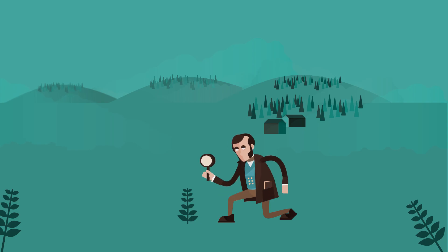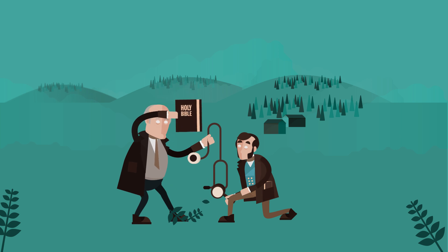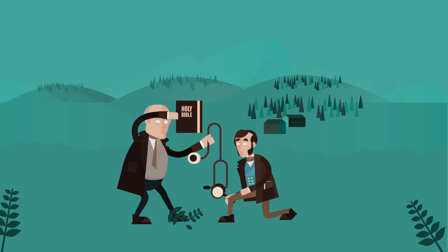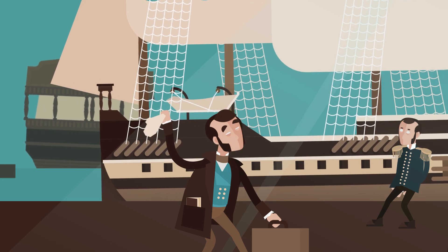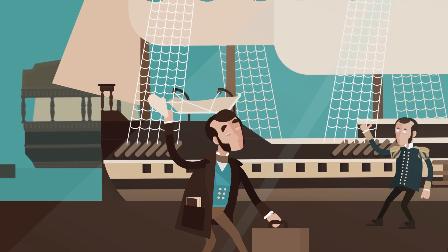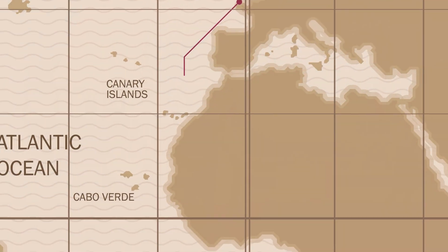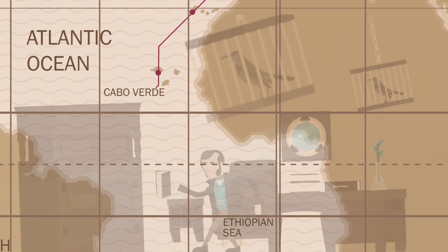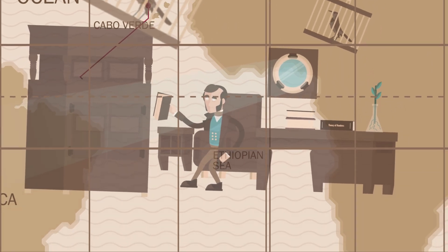Charles Darwin had always wanted to study nature, even though his father wanted him to be a doctor or a priest. Defying him, young Darwin embarked on a ship sent to chart the coasts of South America because he wanted to collect and study exotic animal specimens. What he found on the five-year trip would lead him to question his beliefs.